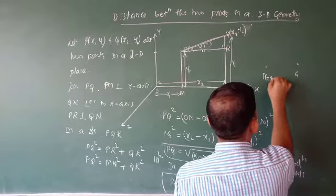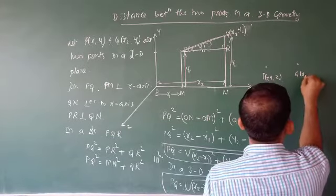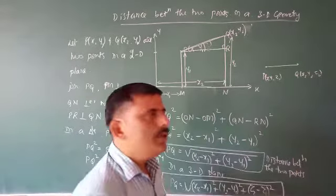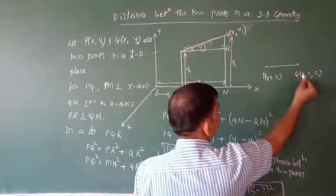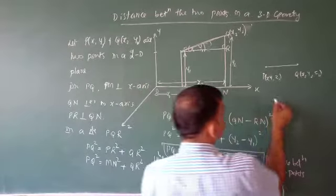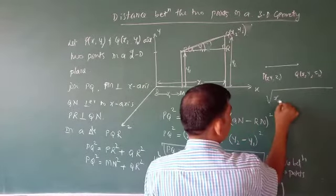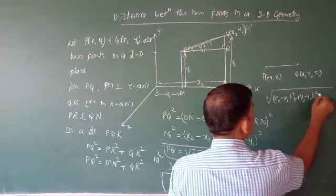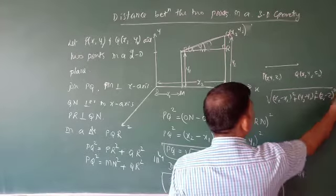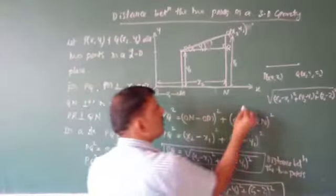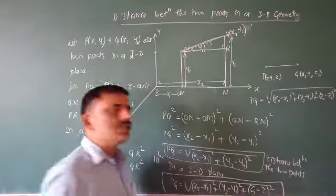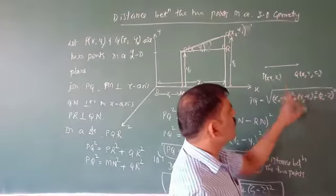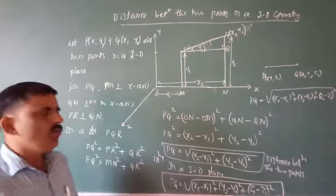For points P(x1, y1, z1) and Q(x2, y2, z2), the distance PQ = √((x2−x1)² + (y2−y1)² + (z2−z1)²). This is the complete distance formula for three-dimensional geometry.